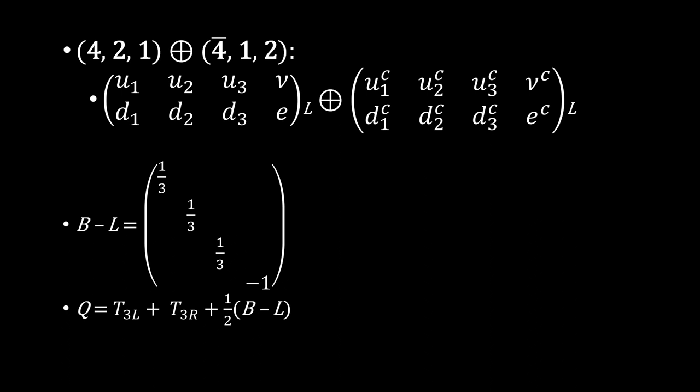Baryon number minus lepton number acting on 4 of SU(4) and electric charge are also shown. One family is contained in two irreducible representations. There are two independent gauge couplings.